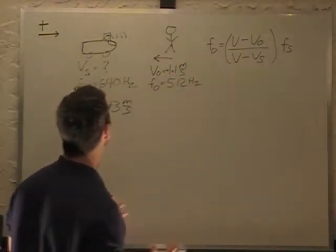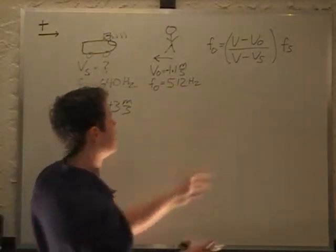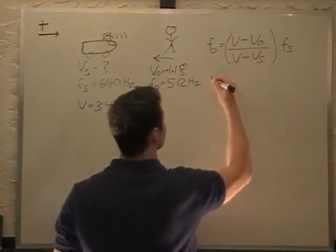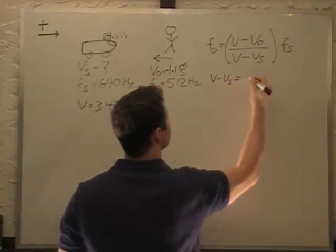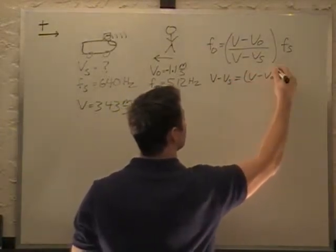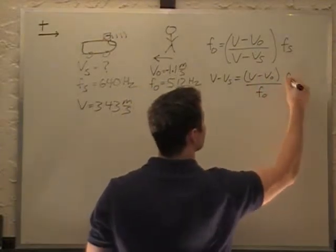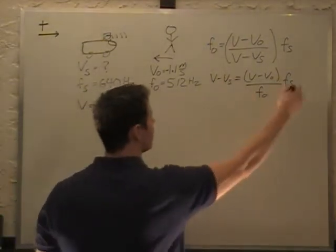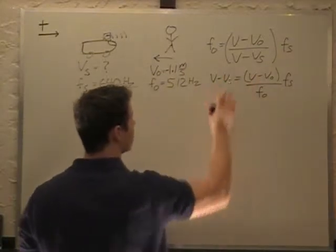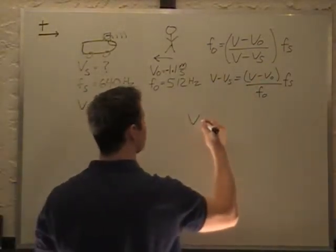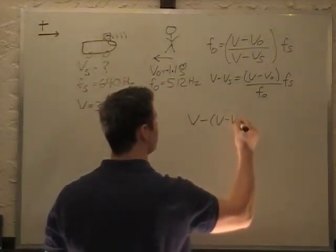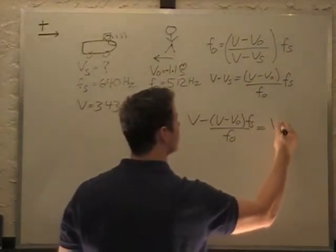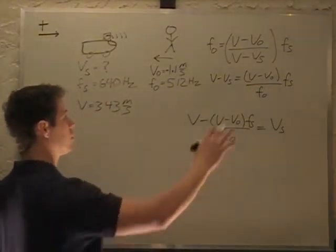Let's solve for Vs. I'm going to multiply V minus Vs over and divide frequency to this side. So I get V minus Vs equals V minus V₀ over F₀ times Fs. Now I'll add the source velocity and subtract this term. So I get V minus bracket V minus V₀, Fs over F₀ equals the source velocity.